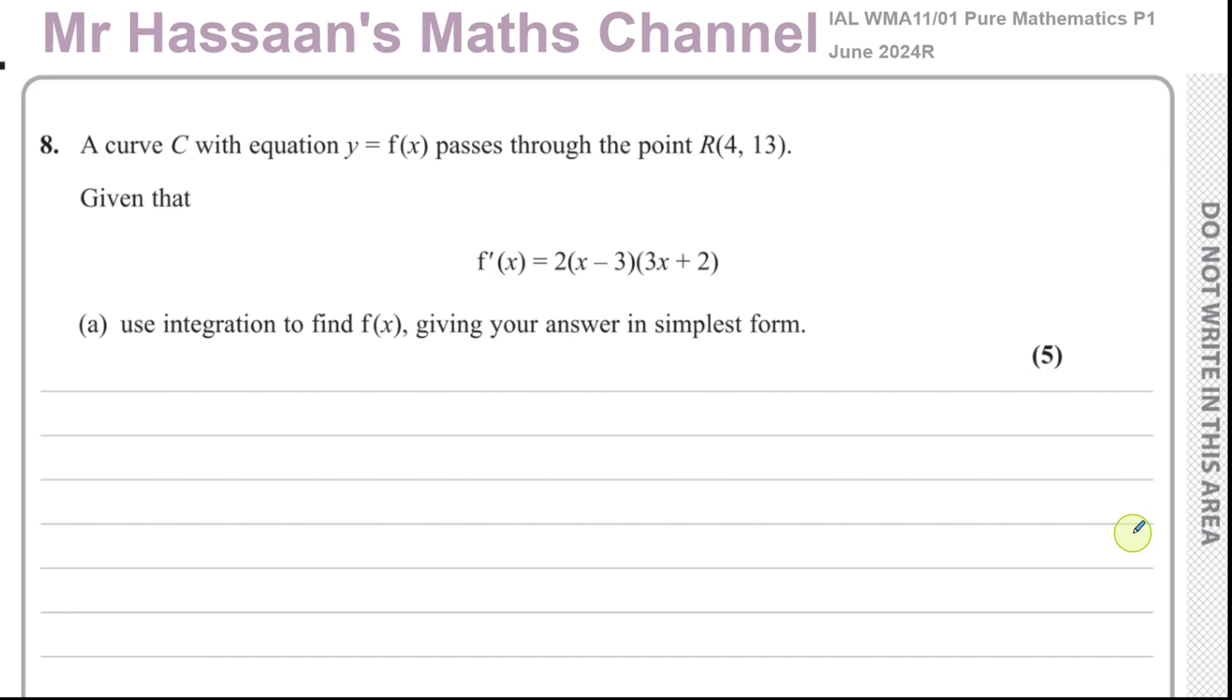Part question 8a is asking us to use integration to find f(x) where they gave us f'(x). They told us the equation y equals f(x) passes through the point R which has coordinates (4, 13). We're told that the differential of f(x), the gradient function for f(x), is given by this expression 2(x - 3)(3x + 2), and we've got to use integration to find the original function giving our answer in simplest form. As they gave us a point on the curve, we can find the actual equation of the curve y equals f(x).